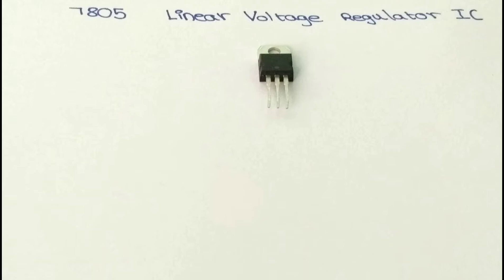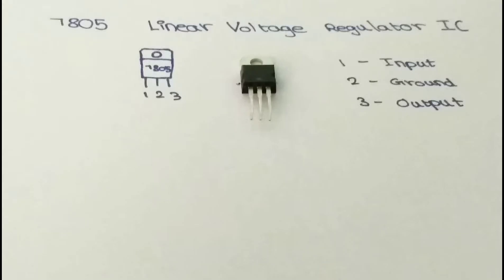As you can see, it has three pins: input, ground, and output. With pins 1 and 2, you can give the input voltage to the IC, and with pins 2 and 3, you can get the regulated voltage as an output.